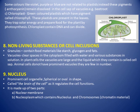Vacuoles are clear spaces in the cytoplasm filled with water and various dissolved substances — this solution is known as the cell sap. In plant cells, vacuoles are large and prominent, and the liquid they contain is called cell sap. In animal cells, vacuoles are very small and not prominent.